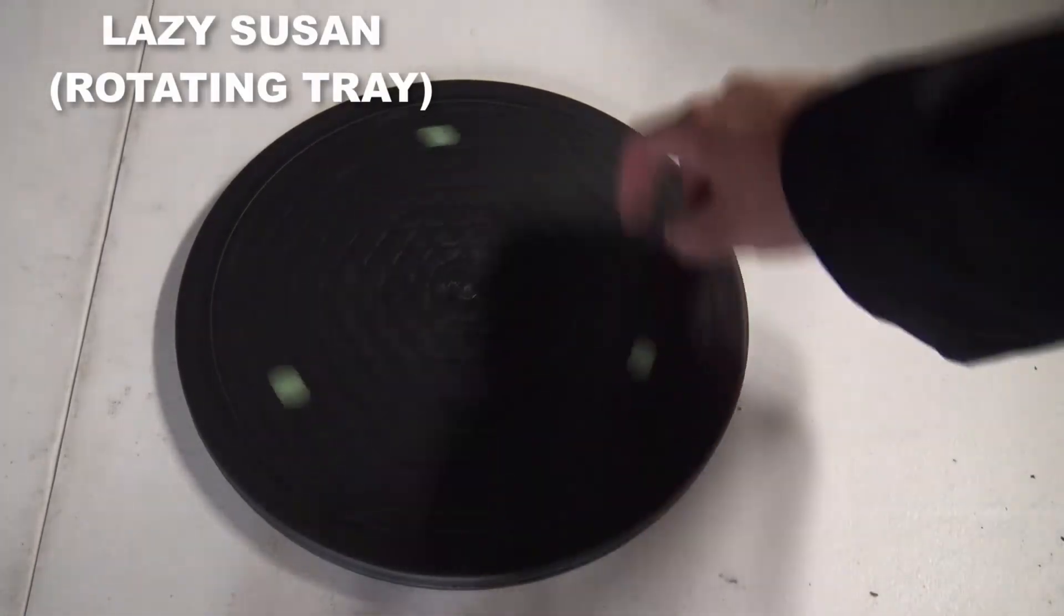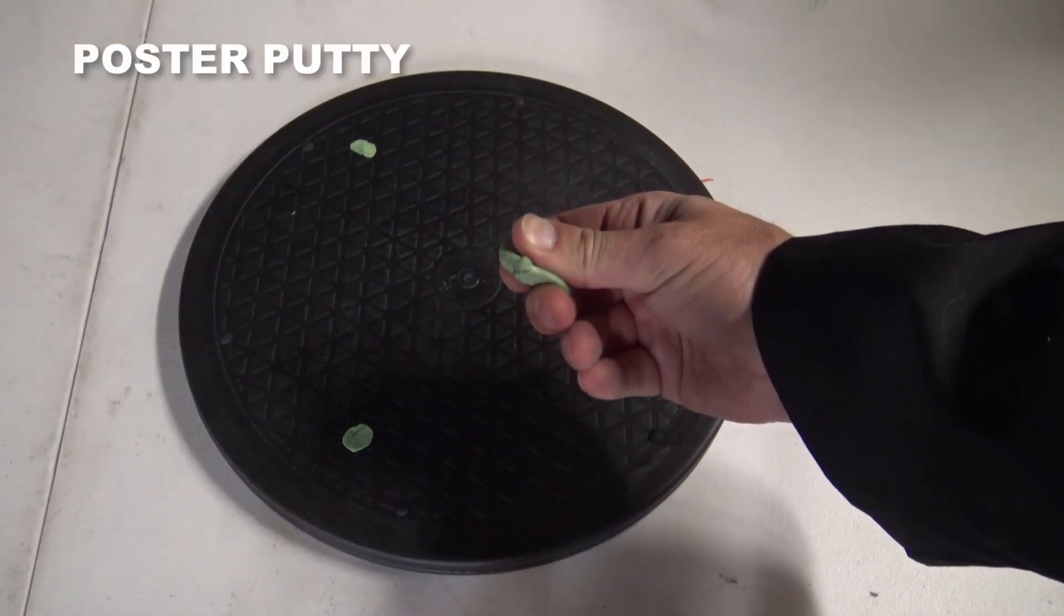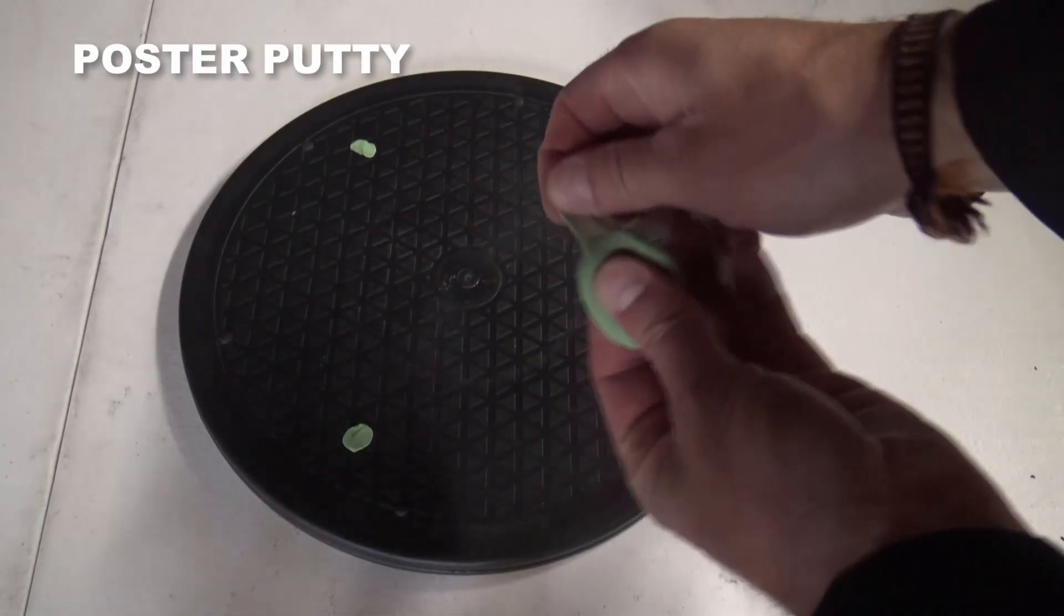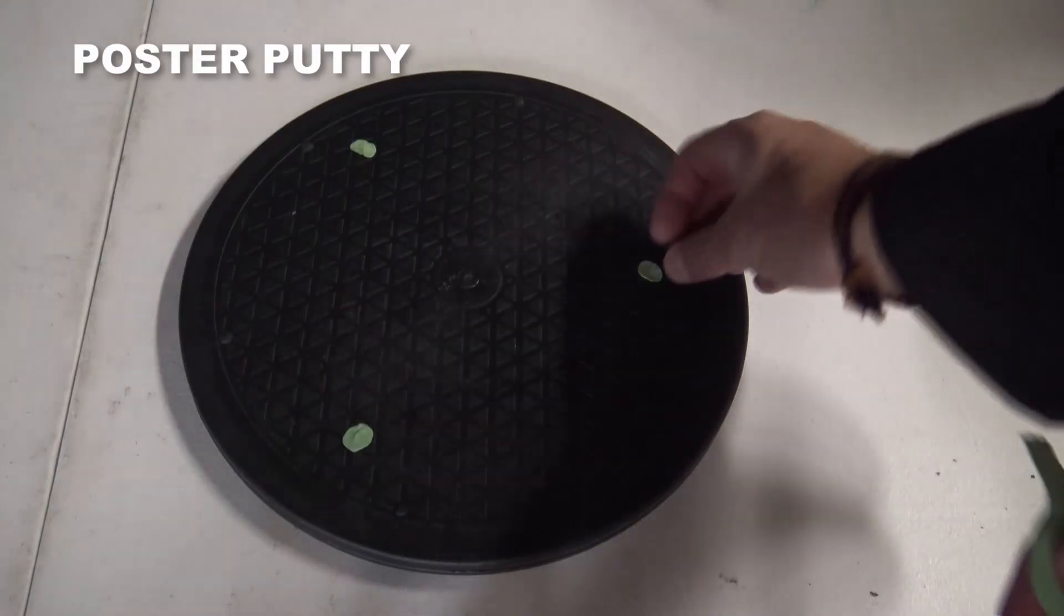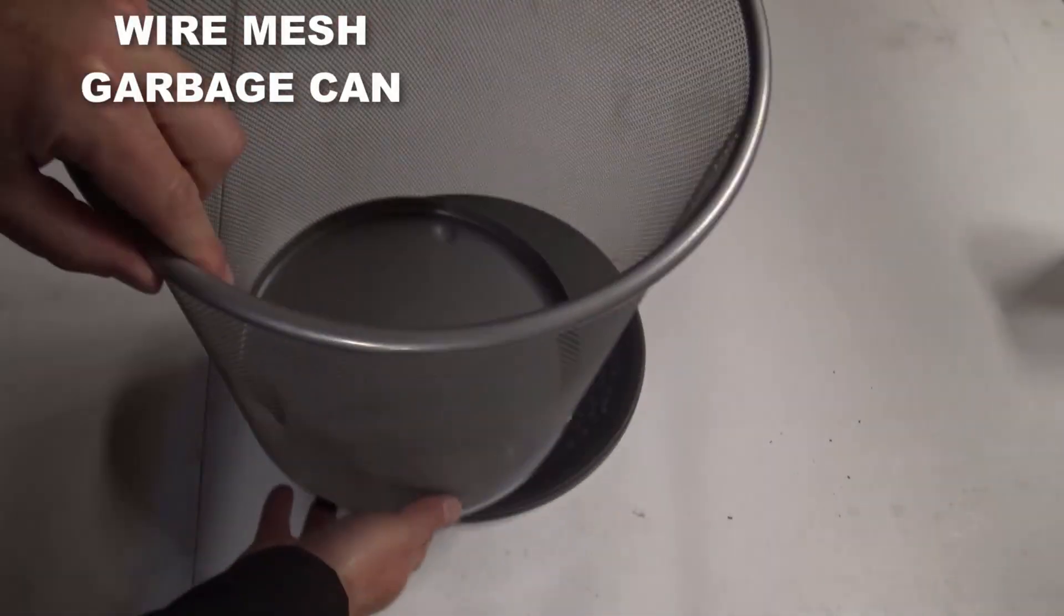You need to get a lazy Susan or any rotating tray that will easily spin around. Then I've got some poster putty - this is the sticky stuff that you put behind paper to stick to a wall but it comes off pretty easily. It works really well for this.